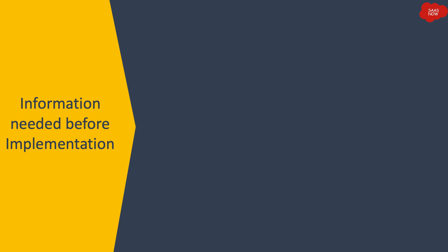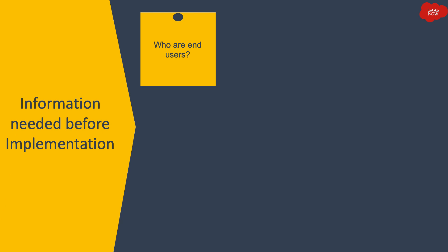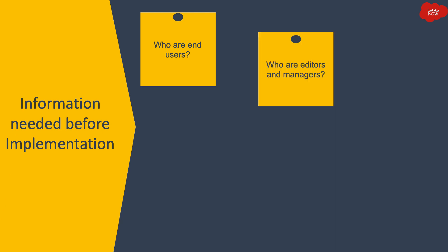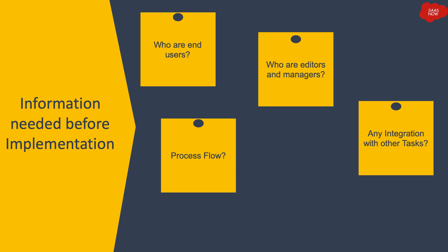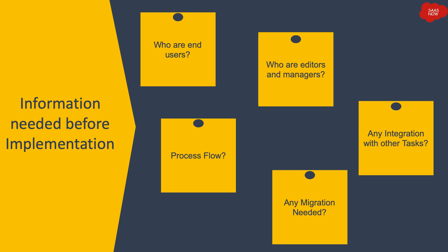Before starting the implementation, you need to gather some information so you can implement knowledge management accordingly. This includes: who are the end users who will be viewing and using the articles; who are the managers and editors; any specific process flow before an article gets published; any need for integration with other modules like incident, problem, or change; and any need for migration of knowledge content from another system.